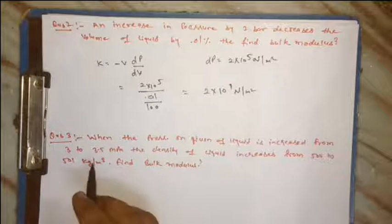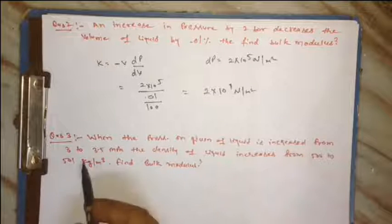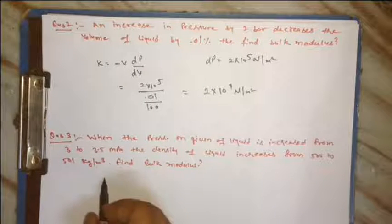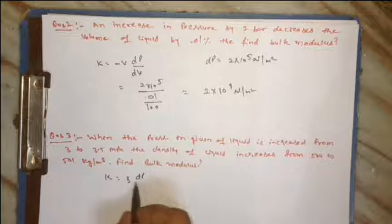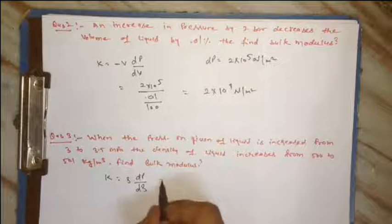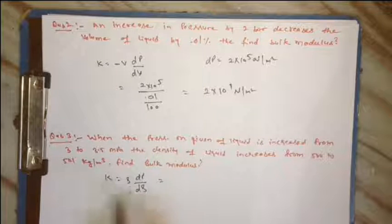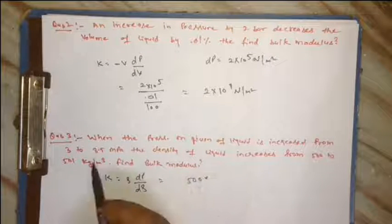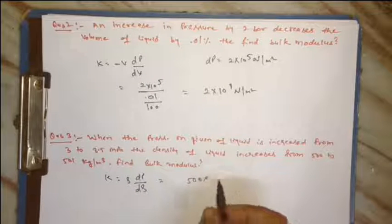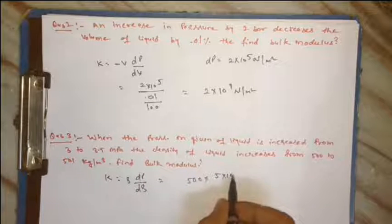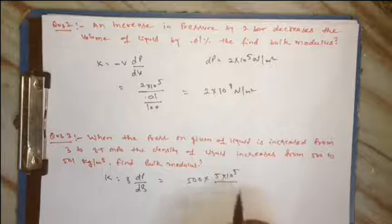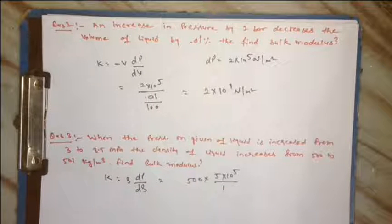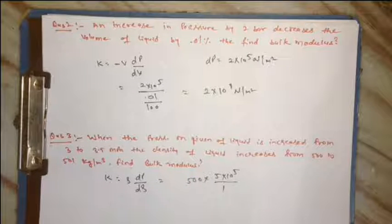Thik hai. Next one: when pressure on given liquid is increased from 3 to 3.5 and density of liquid increases from 500 to 501, find the bulk modulus. Which relation - the one with density: ρ dP/dρ. Niche kaha yega dρ value kitni hai 1.